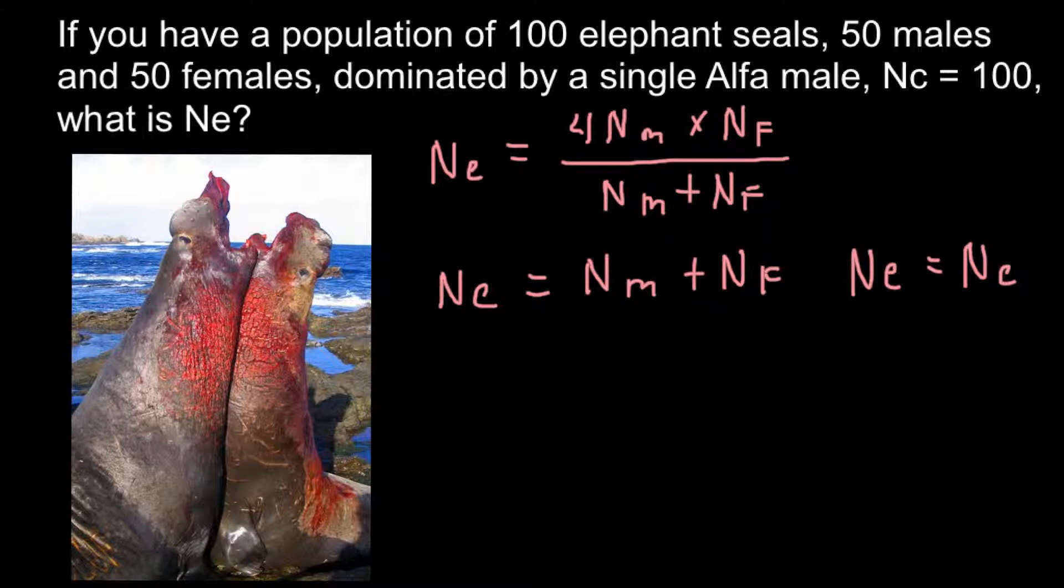This formula here represents human society, where usually we have balance between sexes. And the last formula that we are going to apply today, in order to solve this problem, would be NE, effective population size.